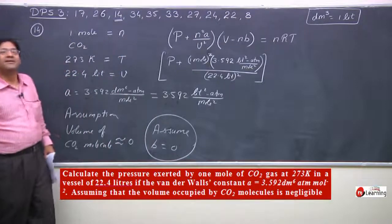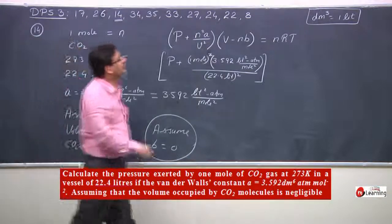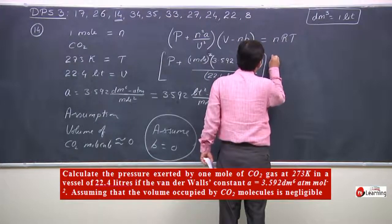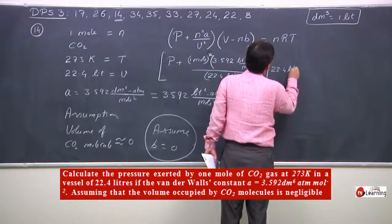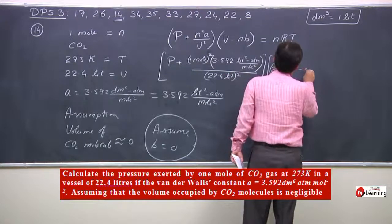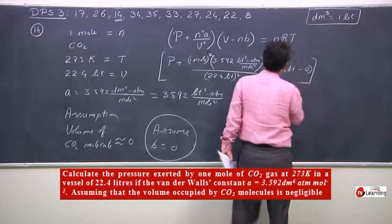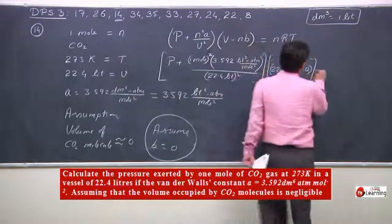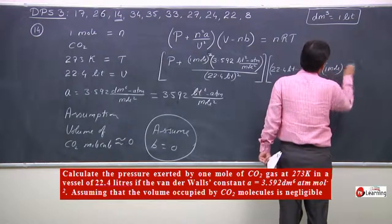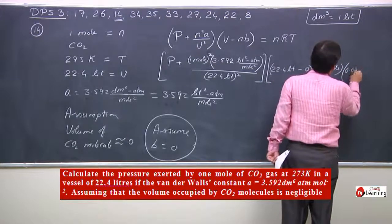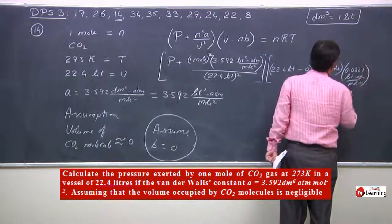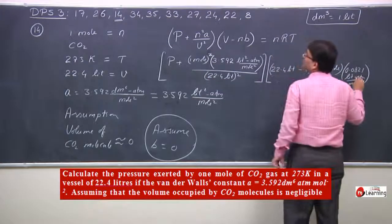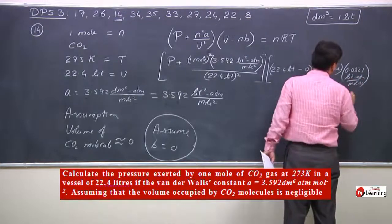I have substituted all the values here. For V, we put 22.4 liters, minus 0 (since B = 0). For N = 1 mole, R = 0.0821 liter atmosphere per mole per Kelvin, and temperature = 273 Kelvin.